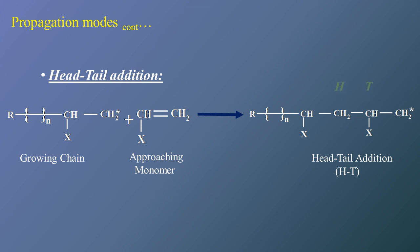During propagation, any one, or a combination of two, three, or all four modes of addition may take place — it may be head-head, head-tail, tail-tail, or tail-head. These are the four different propagation modes of addition polymerization by which the polymeric reaction can take place. This is all about the various modes of propagation. I hope it is clear. Thank you.